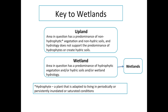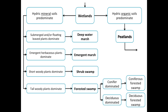How do we tell the different wetlands apart? There are many different kinds of wetlands in the Adirondacks. We've already talked about the three factors that distinguish wetland from upland: hydrophytic vegetation, hydric soils, and wetland hydrology. Once you've decided that the area in question is a wetland, you can ask additional questions that will reveal what kind of wetland it is.